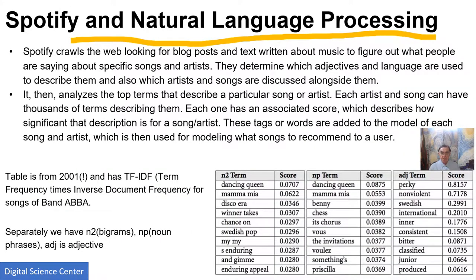Here we have how they do natural language processing. Spotify looks all over the web for text material on music, songs, and artists. It looks at which adjectives and language are used to describe them, and which artists and songs are discussed along with each text. Then it looks at the top terms associated with a particular song or artist and gives a score describing how important that concept is. You can then use that with classic information retrieval technology. TF-IDF is a classic way of judging, in a normalized fashion, the importance of the occurrence of a particular term.